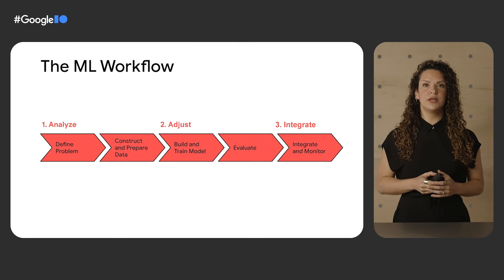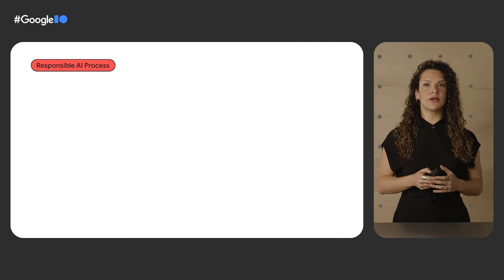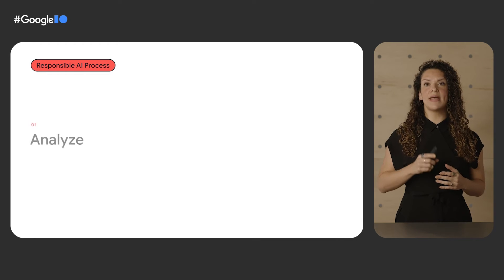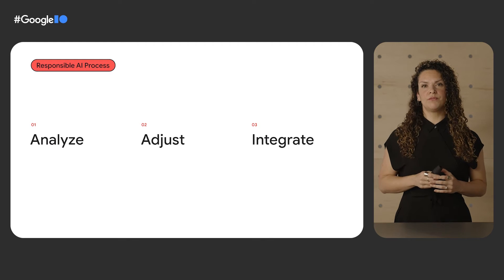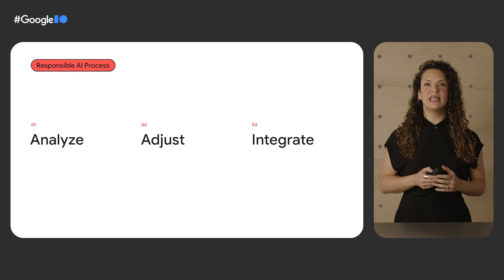This applies from the earliest problem definition, to data set preparation, to model training, evaluation, and monitoring. With a product's development life cycle in mind, we use a proactive approach that we'll break down here into three steps: Analyze, Adjust, and Integrate. This is essentially a review process of the technology you're developing, involving responsible AI questions along the way, keeping how your technology will be used in practice top of mind. Within each of these steps, there are open source tools, frameworks, and other resources to help you build an AI application responsibly.